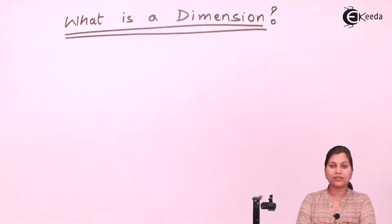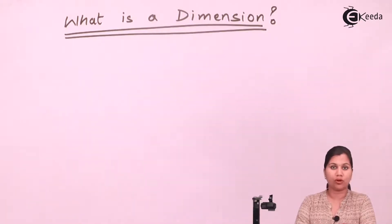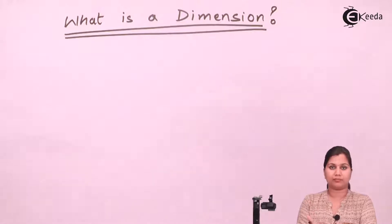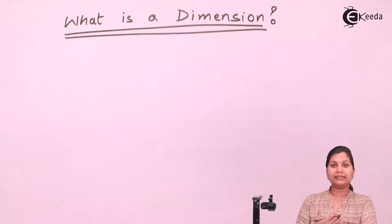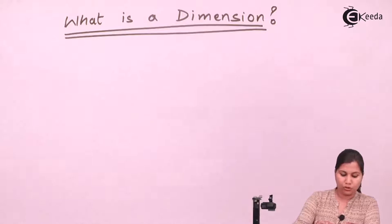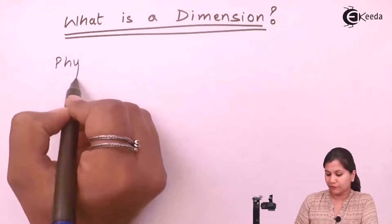We know that in this universe, we are having various physical quantities like length, mass, time, temperature, velocity and many more. Every physical quantity has its own identity. Length tells us how long an object is. Weight or mass tells us how heavy that object is. So in this physical world, we are having various physical quantities.